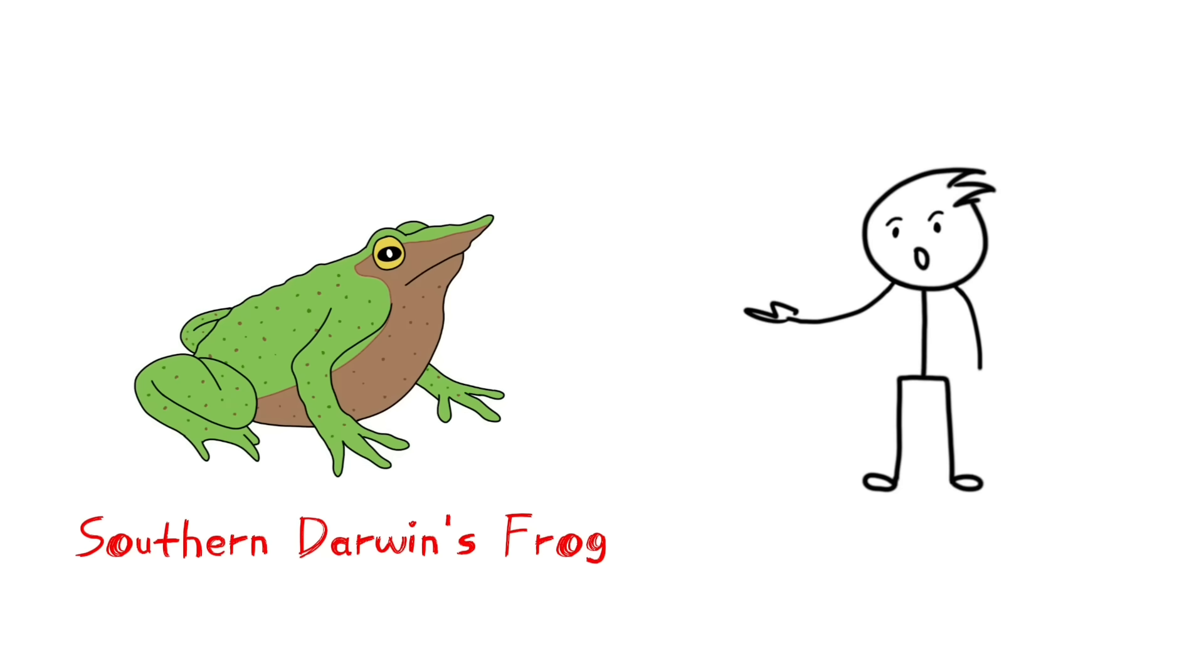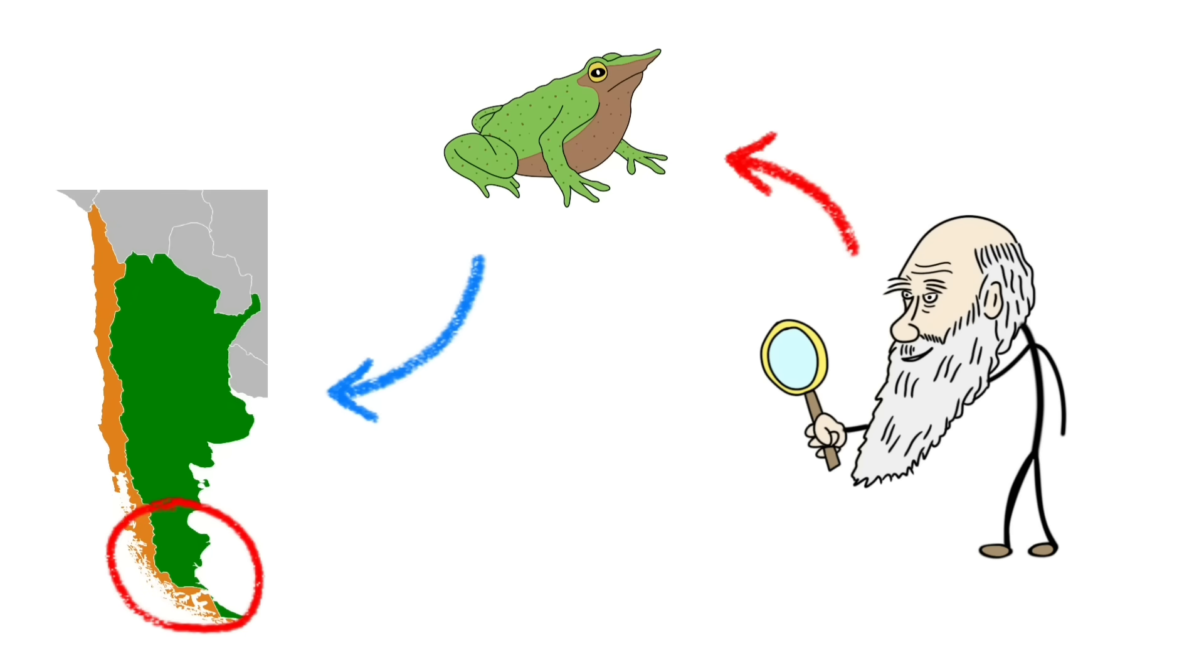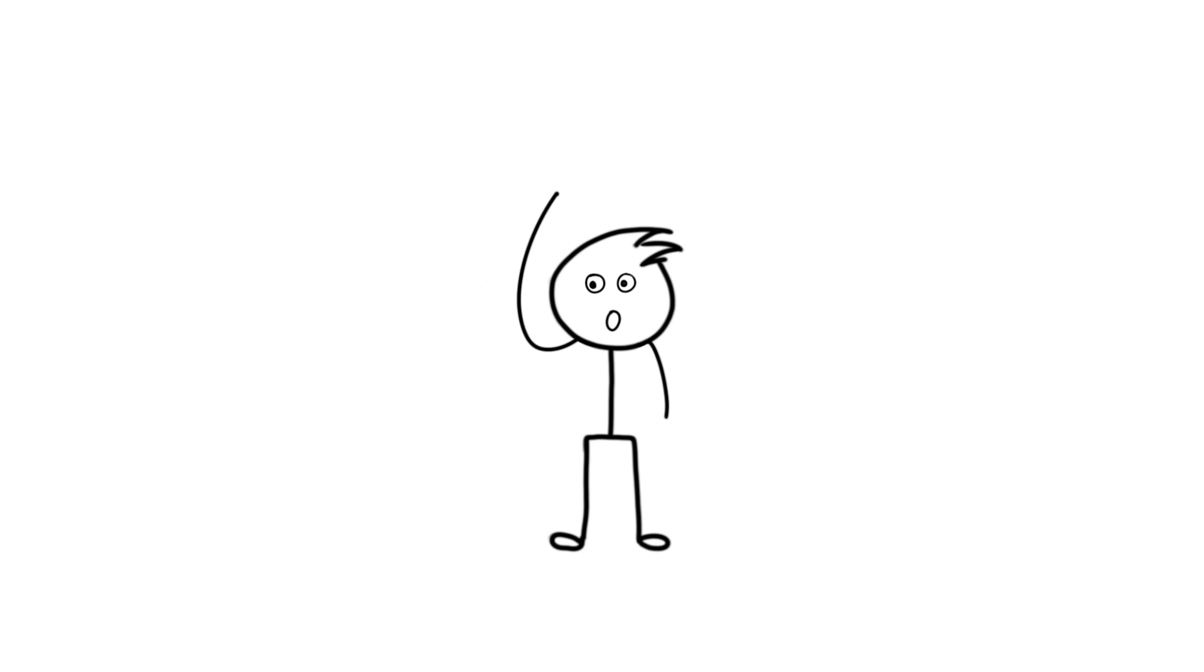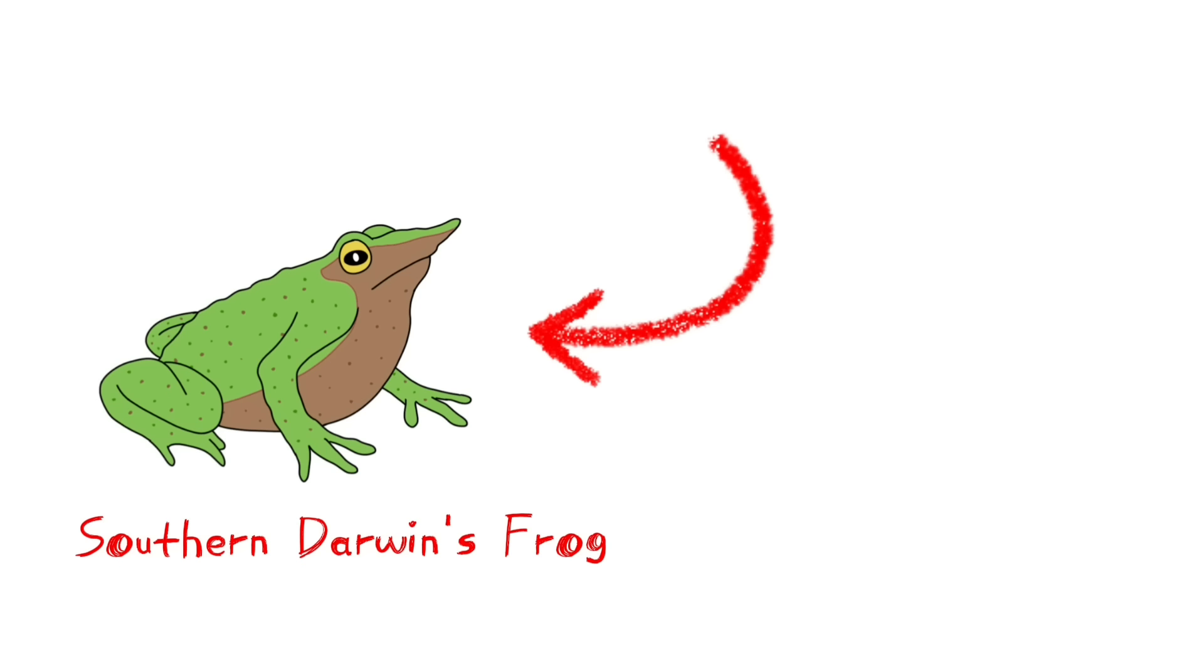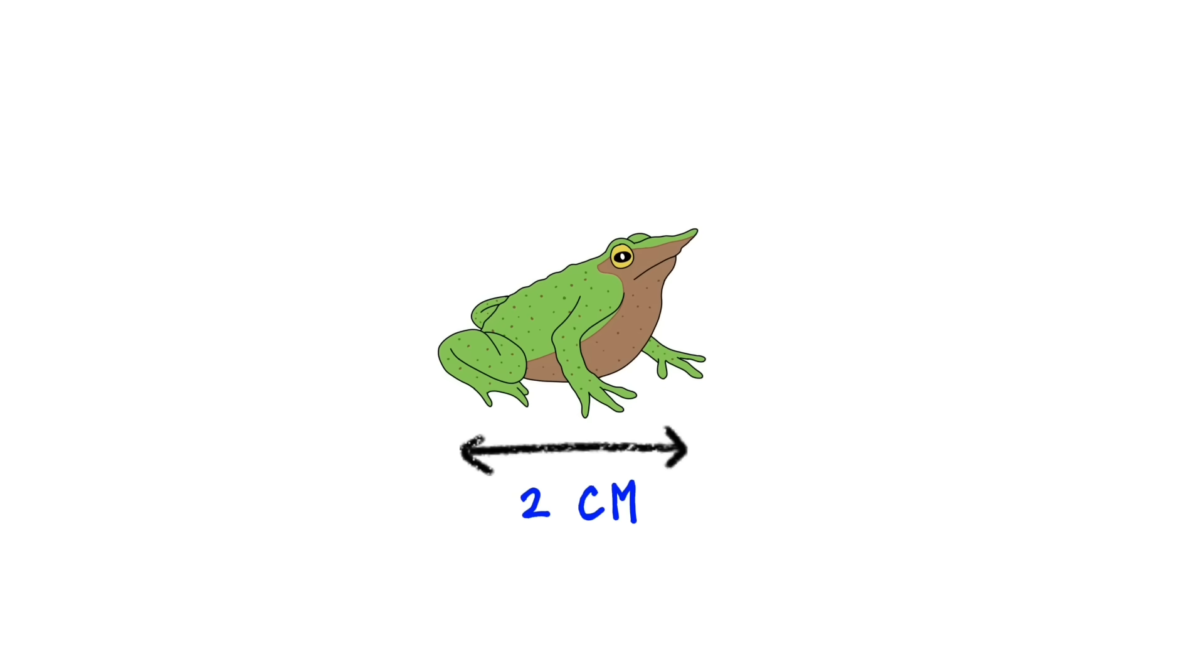This Pinocchio is Southern Darwin's frog. Charles Darwin found this frog on the southern side of Chile in Argentina, so it was named like that. There is also a northern species with similar mating style, but scientists say it's probably extinct. So, we'll talk about the southern one in this video. These frogs are small, just around 2 centimeters in length.